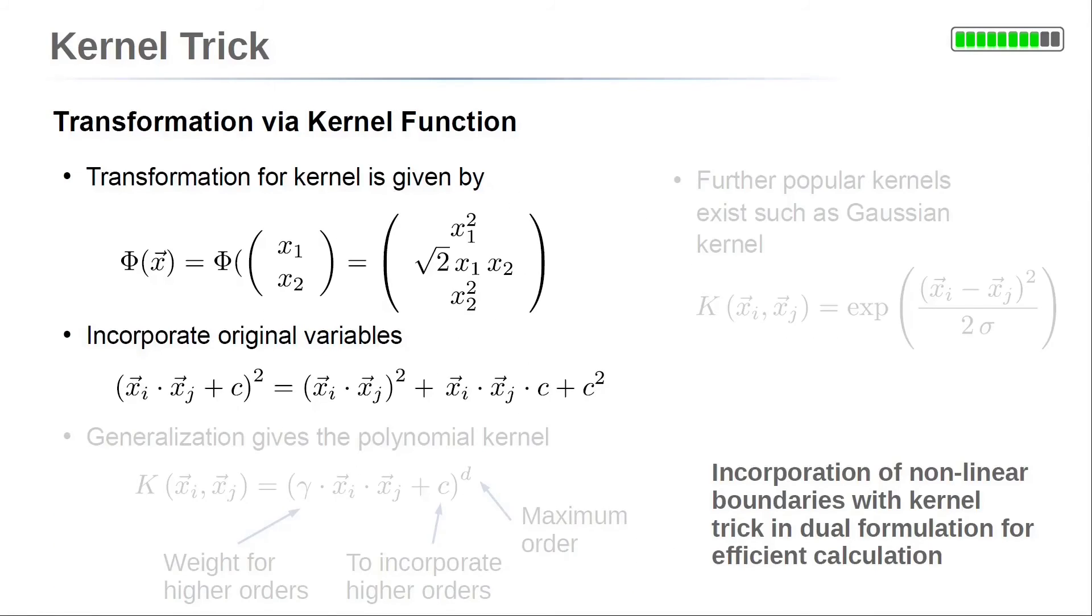So far, we replaced our original variables x1 and x2 by three new variables: x1 squared, x2 squared and x1 times x2. But what about our original variables x1 and x2? How can they be incorporated additionally? This can be done by adding a constant c to the dot product before calculating the square of it. We can multiply this out and see that we've incorporated the square term for the transformed dot product. And in addition, we have the simple dot product of vector xi and vector xj for incorporating the original variables.